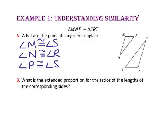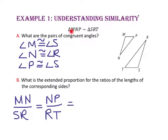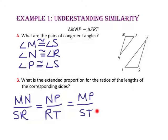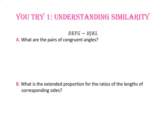For part B, what is the extended proportion for the ratios of the lengths of the corresponding sides? The first two letters in the names of our triangles, side MN and side SR, will be our first ratio. The second two letters, NP and RT, will be our second ratio. And the first and last letter of each triangle name will be our third ratio, so MP and ST. The ratio of segment MN to segment SR equals the ratio of segment NP to RT, which also equals the ratio of segments MP to ST. Now pause the video and do You Try number one.